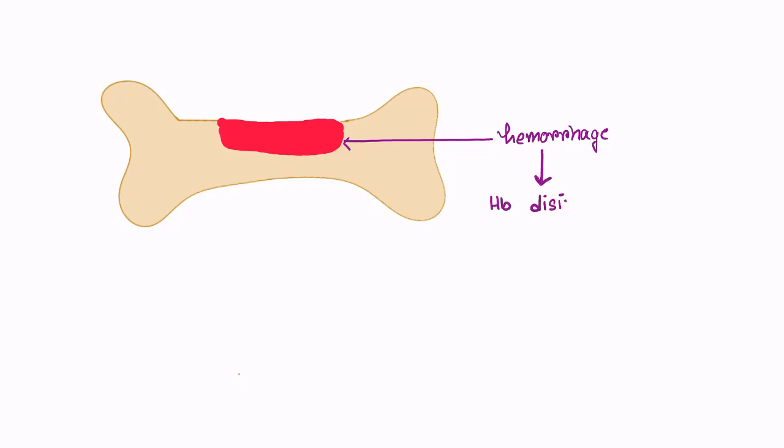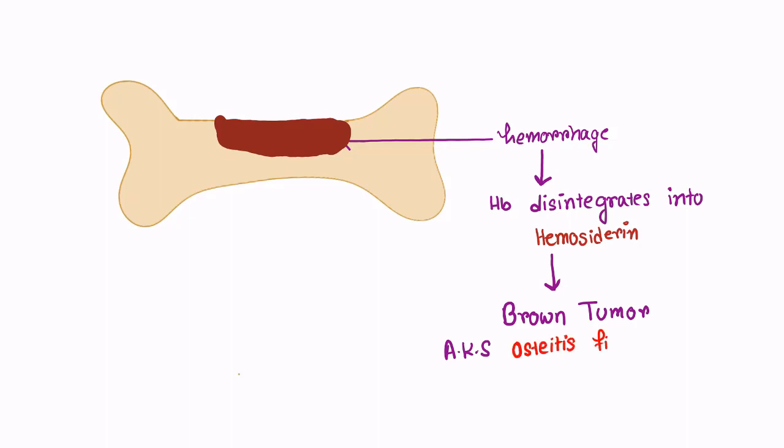Over time, this hemoglobin will be disintegrated and will produce hemosiderin, which is brown in color. So there will be a cyst in the bone which is filled with brown colored fluid, which is called brown tumor. It is also known as osteitis fibrosa cystica.